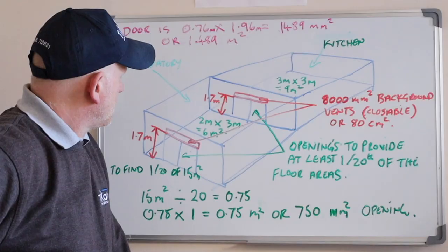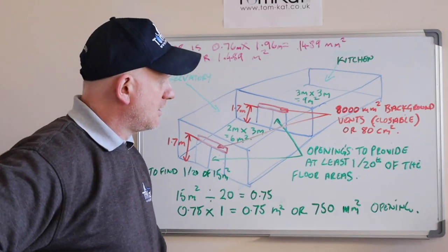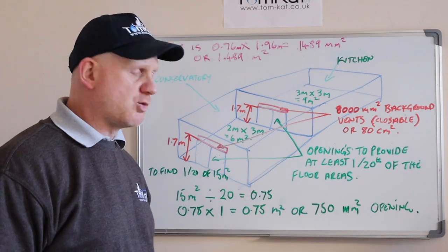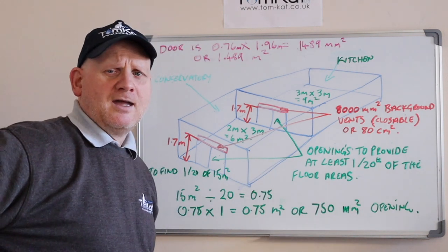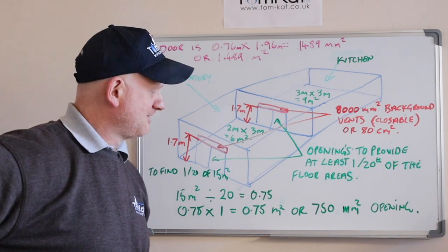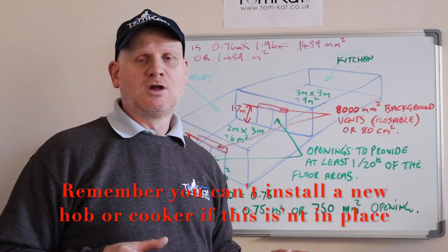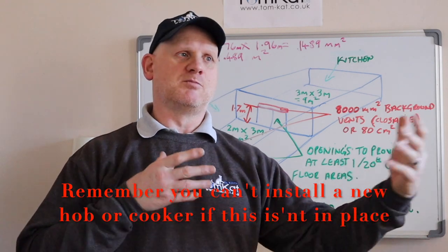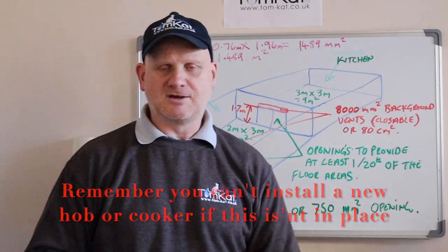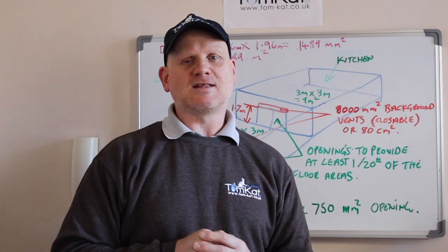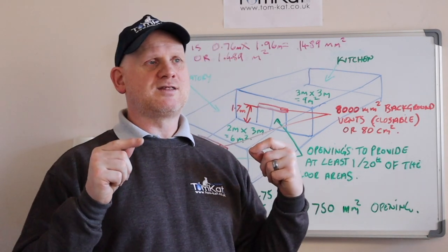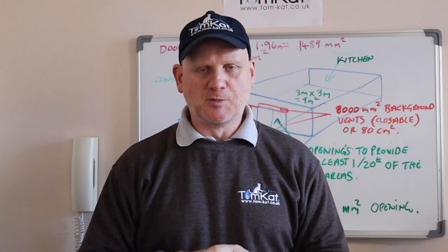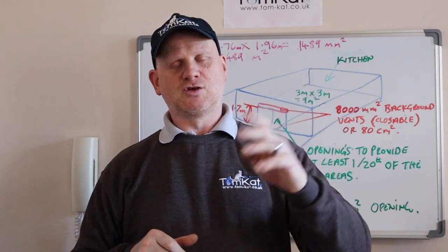I hope that has made it a little bit clearer — what 1/20th is and how to work it out. A standard door should be sufficient for that combined floor area, but obviously if you've got a bigger combined floor area you'll need a bigger opening. Hopefully that has helped with the Building Regs for a kitchen that does not have an openable window due to a conservatory.